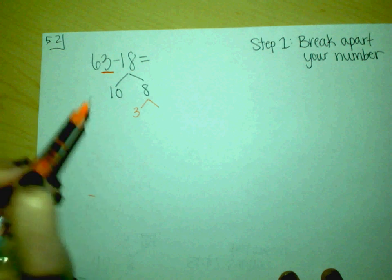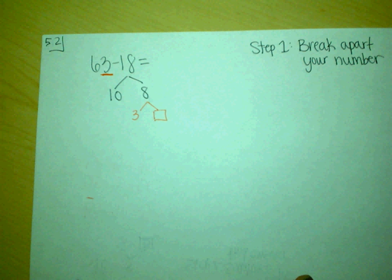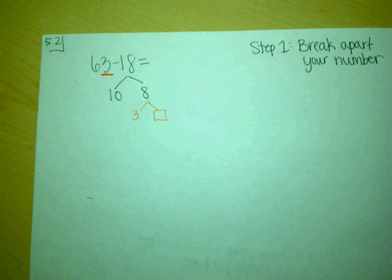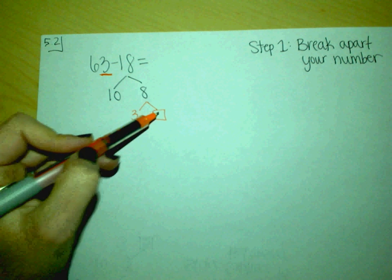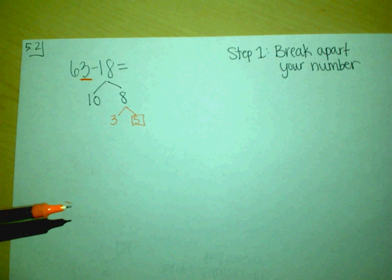That will at least be one of your numbers to break apart eight. You know that you need to break eight into three and what? And I usually draw a box and let the kids fill it in so that they can see that three plus five equals eight. So our three numbers are ten, three, and five. That is step one.